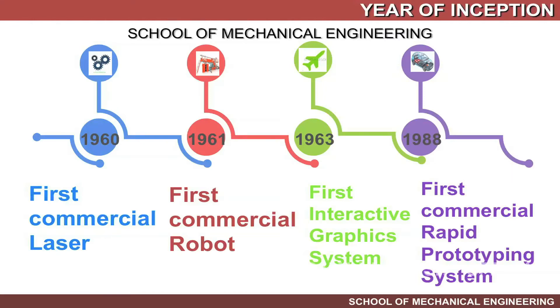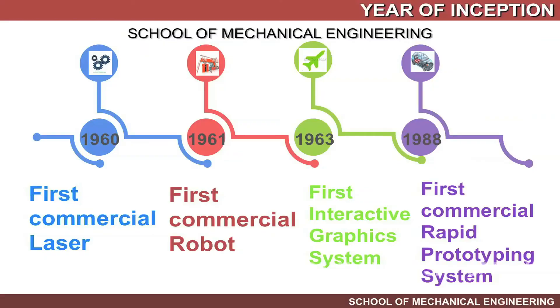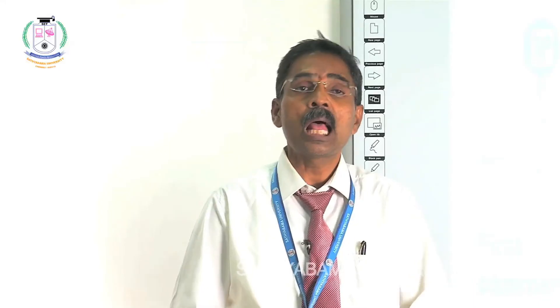Regarding the year of inception: in 1986, the first commercial laser was launched. Later, the first commercial robot was introduced. In 1963, the first interactive graphic system was developed. These form the basis for RP technology, which was launched in 1988 as the first commercial RP prototyping system in the market.